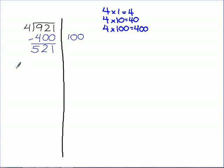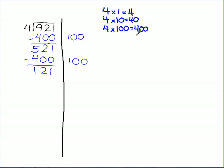Can I take another set of 400 out? Yes. So let's take another set of 400 out. In order to do that, 4 times 100 makes 400. Subtract, and so I'm going to end up with 121. Can I take out another set of 400? No, I cannot take out another set of 400. So I'm done with this part.